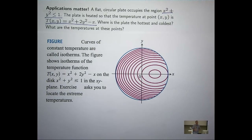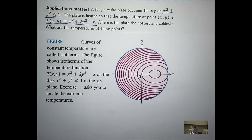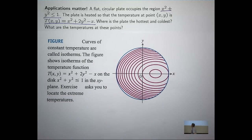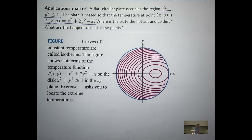In this particular example, here's a plot of the level curves of T. Now when we talk about temperature functions, those level curves have a special name called isotherms. The blue curve in this case is like the edge or the boundary of my disk or my plate. Now hopefully you can see, at least from this picture, where an extrema might occur.